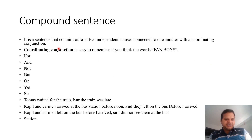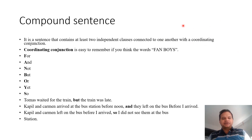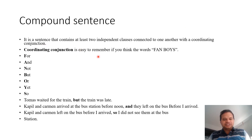Now, compound sentence. It is a sentence that contains at least two independent clauses connected to one another with a coordinating conjunction. The feature of it is two independent clauses. When they are connected with a coordinating conjunction, it is known as a compound sentence. Coordinating conjunctions are very easy to remember.